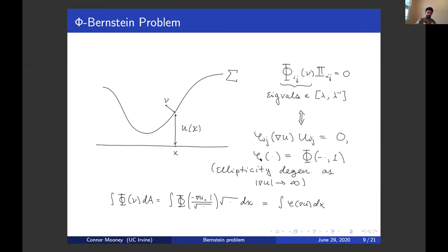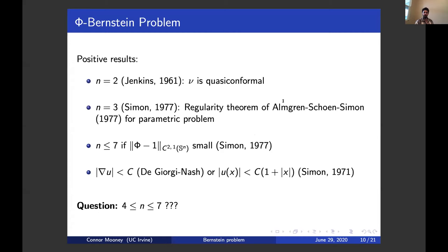Let me review what's known about the Bernstein theorem for this more general class of elliptic equations. The first result, due to Jenkins in 1961, is that the Bernstein property is true in two dimensions: global solutions to these equations of minimal surface type are linear functions in 2D. The idea is again related to complex analysis — the Gauss map of a minimizer is not conformal necessarily, but it's quasi-conformal. Jenkins shows that global quasi-conformal maps into the unit sphere which are bounded must be constant. Then Leon Simon extended this to dimension 3 in 1977, using a very difficult regularity theorem of Almgren, Schoen, and Simon from the same year.